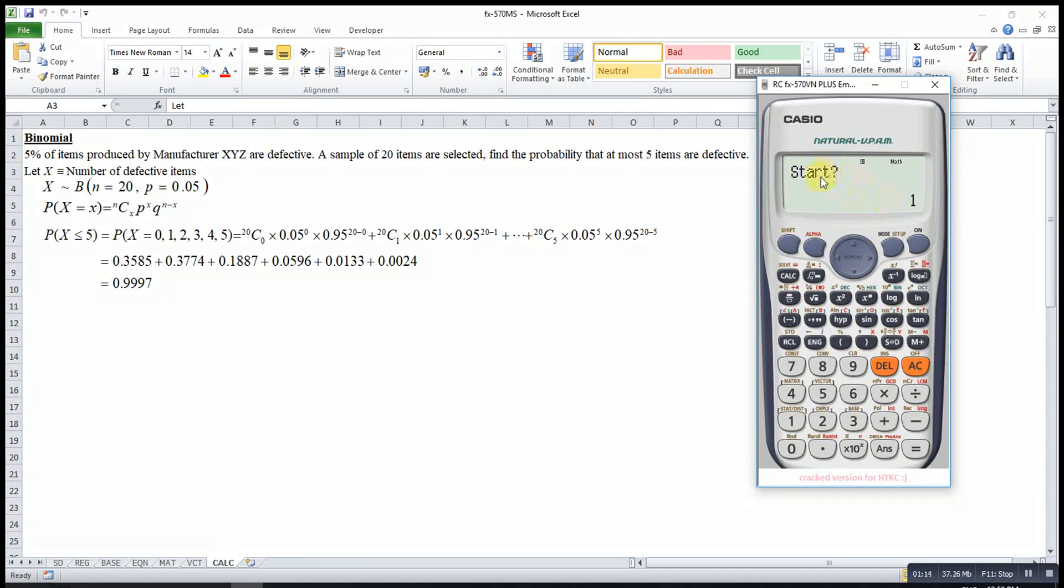Then what's the meaning of start? Start is the minimum value. For binomial distribution, the minimum value will be 0. Then N will be the maximum value. If you want to follow the question, then you press 5.